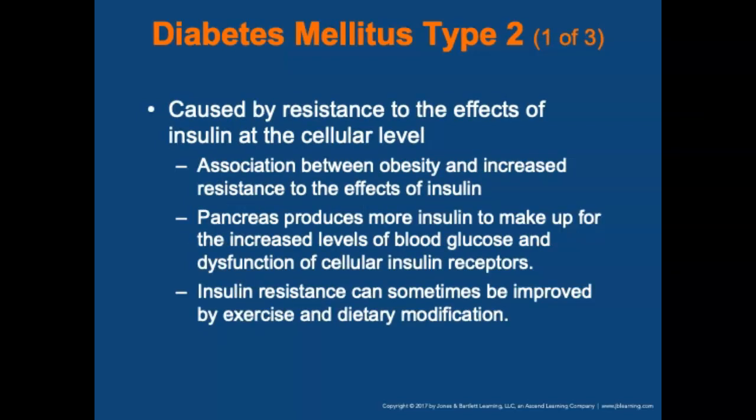Diabetes mellitus type 2 is caused by a resistance to the effects of insulin at the cellular level. There is an association between obesity and increased resistance to insulin. The pancreas produces more insulin to compensate for increased blood sugar levels and dysfunction of cellular insulin receptors. This response becomes inefficient, and blood glucose levels continue to rise and do not respond when the pancreas secretes insulin — a process called insulin resistance. These are typically older patients, as the condition forms over their lifetime.